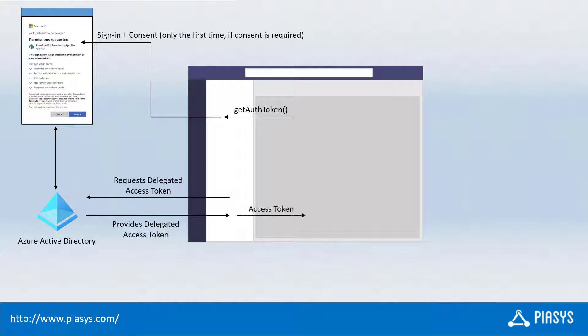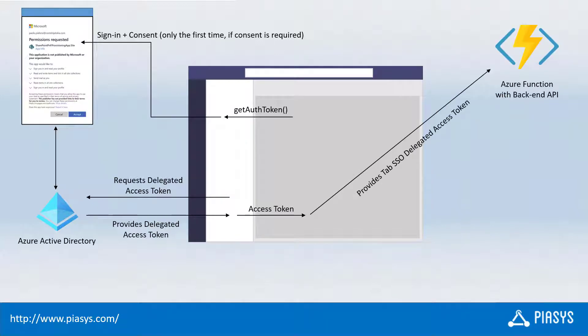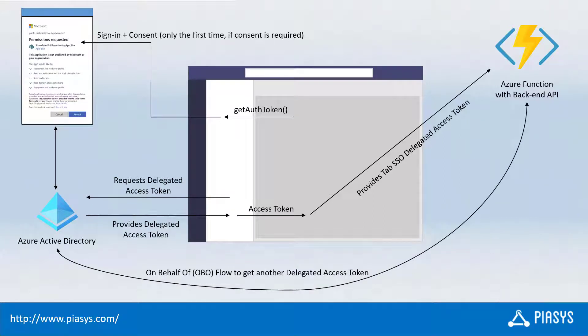The Teams client will provide that access token to our Teams tab custom logic, so that we will be able to have a delegated access token in the name of the currently connected user. Now, we can have a back-end API — which could be, for example, an Azure Function — to which we can provide, as an authorization header, the access token that we just got back from the getAuthToken method. The Azure Function will be able to use the on-behalf-of flow, talking with Azure Active Directory in the back-end, in order to get back a new delegated access token, still in the name of the currently connected user, but in order to consume any other back-end API, like for example Microsoft Graph or SPO REST.